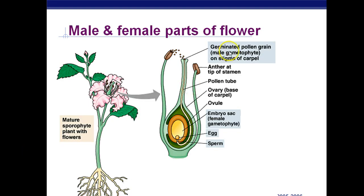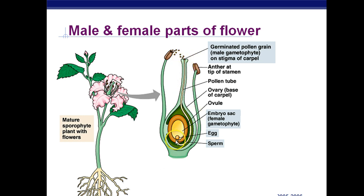Here we have the germinated pollen grain — this is the male gametophyte. It's shown in blue because it's haploid; it has only one set of chromosomes. Once the pollen grain lands on the stigma, which is kind of like a landing pad, the cell inside will divide into two sperm nuclei and travel down the style all the way down to the ovule where the egg is inside.